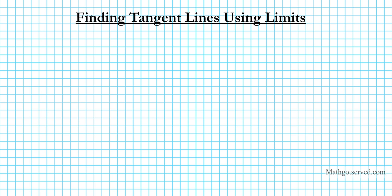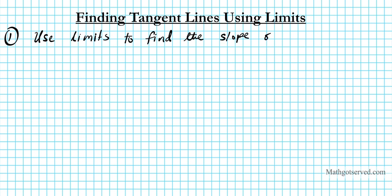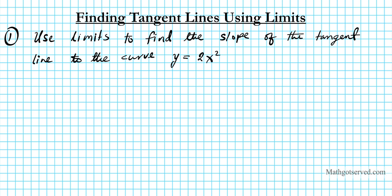Good day, students. In this video, we're going to go over an example on how to use limits to find the equation of a tangent line for curves. So let's go ahead and write down the question. Number one: use limits to find the slope of the tangent line to the curve y equals 2x squared minus 3x plus 1 at the point (1, 0).